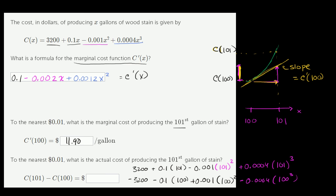So the exact cost is $12.02 — that was a pretty good approximation from the derivative at $11.90. The discrepancy exists because the marginal cost derivative is an instantaneous rate of change: each incremental unit gets more expensive because the curve does not have a constant slope. We can view the derivative as a linear approximation, while c(101) − c(100) is the exact value.